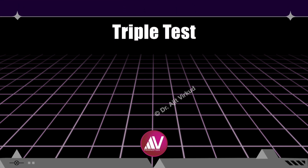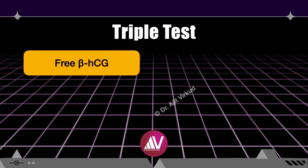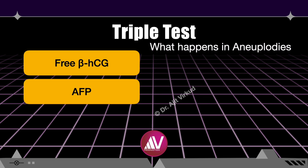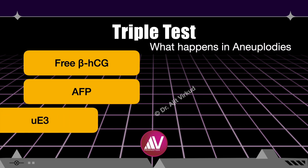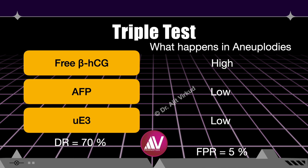The next test introduced was the triple marker screen test, where besides beta-hCG and alpha-fetoprotein, one more marker was added: unconjugated estriol. In autosomal aneuploidies, unconjugated estriol is low. This improved the detection rate to 70 percent while the false positive rate remained the same at five percent.